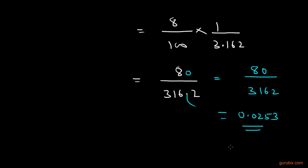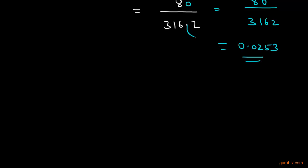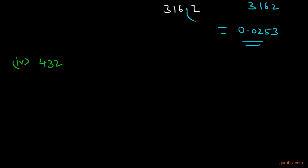So 0.0253 is the square root of 0.00064. Now we move to the last part of the example. In part 4 we are given the number 432 and we have to calculate its square root. We write 432 under the radical sign and proceed to factorize it.